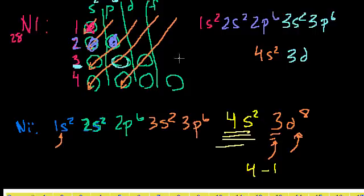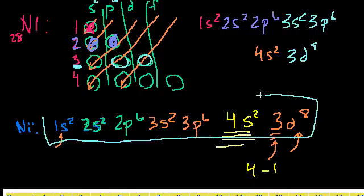And the d subshell, the 3d subshell, can fit the 8 we need. So we have 3d8. And there you go. You got the exact same answer that we had when we used the first method.